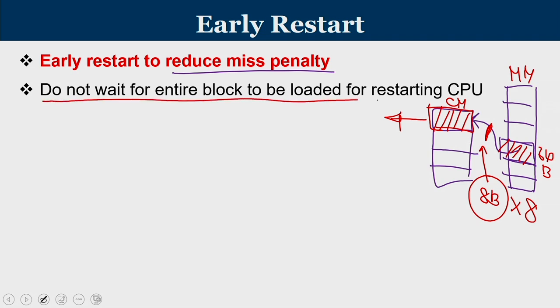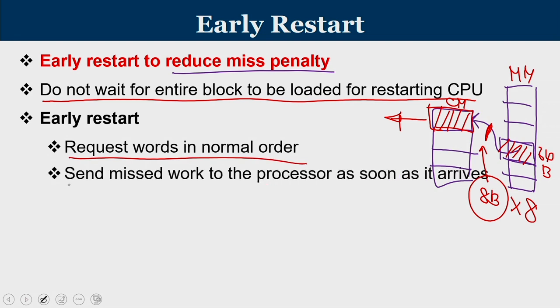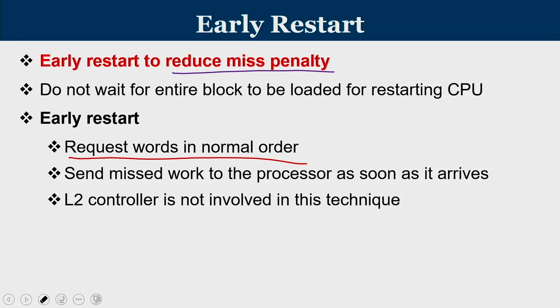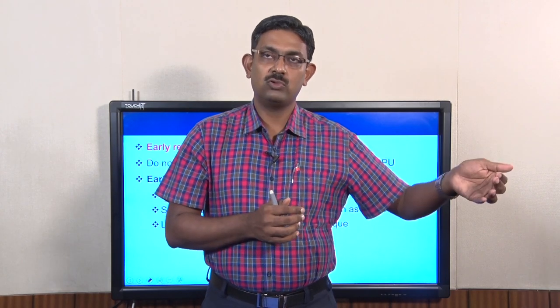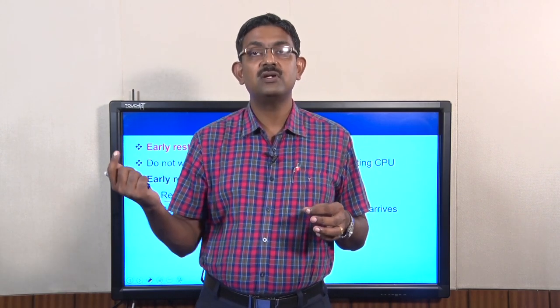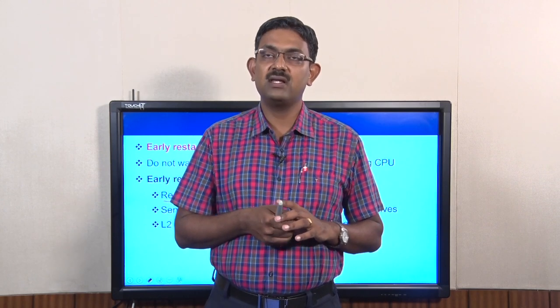In early restart, we do not wait for the entire block to be loaded before restarting the CPU. Words are requested in normal order, and the missed word is sent to the processor as soon as it arrives — the L2 controller is not involved in this technique. Once a miss is known, you go to L2 and bring word by word. As the word that the processor requested arrives, the L1 cache controller forwards it to the processor so it can start work. In the background, subsequent words are copied — this technique is called early restart.